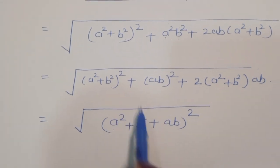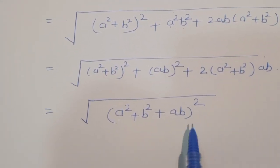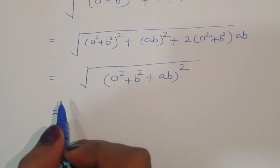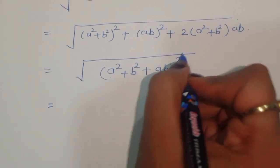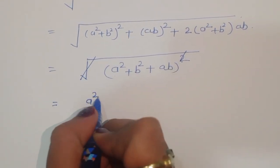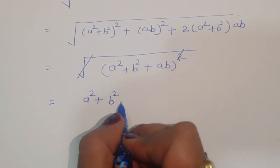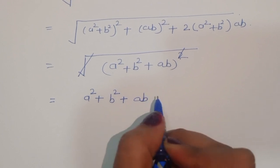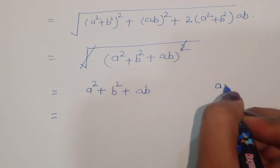Since we had a square root on the outside, the square root and the whole square cancel each other. So we are left with a² plus b² plus ab.